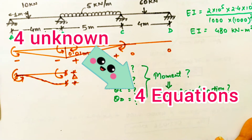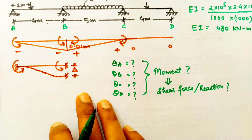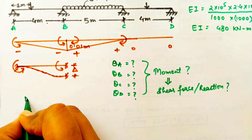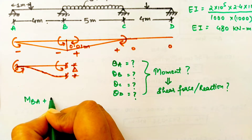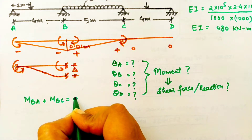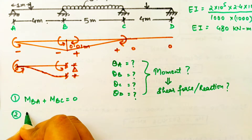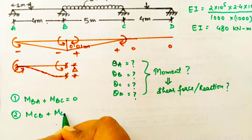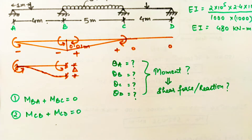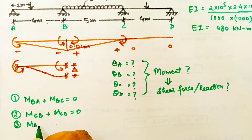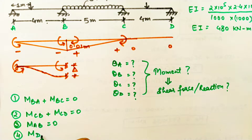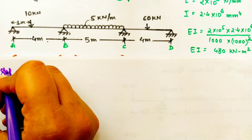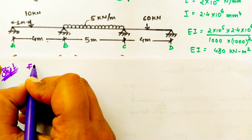To have these four compatibility equations we will be taking moment at both sides of a support equal to zero. The first condition is MBA + MBC = 0, meaning moments on the left side and right side of a support equal zero for equilibrium. The next compatibility condition is MCB + MCD = 0. Since A and D are pin joints, MAB = 0 and MDC = 0.